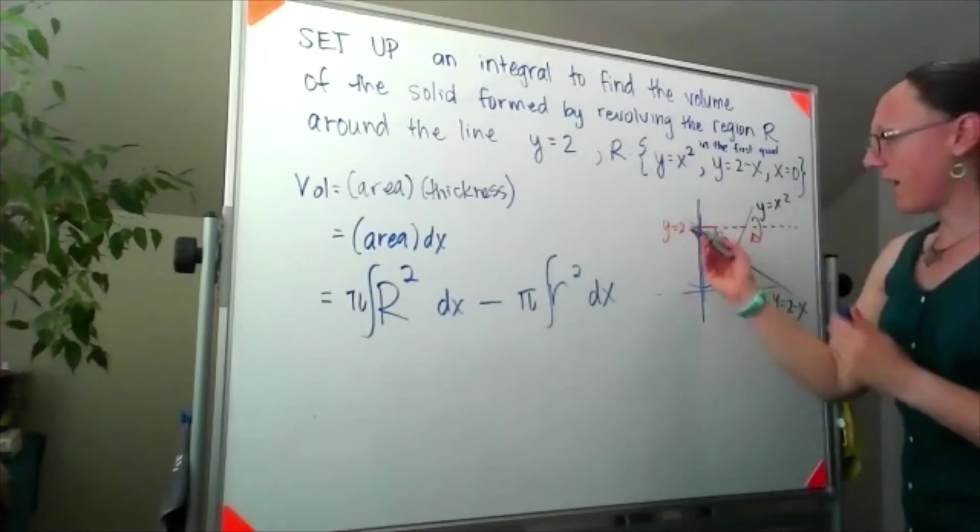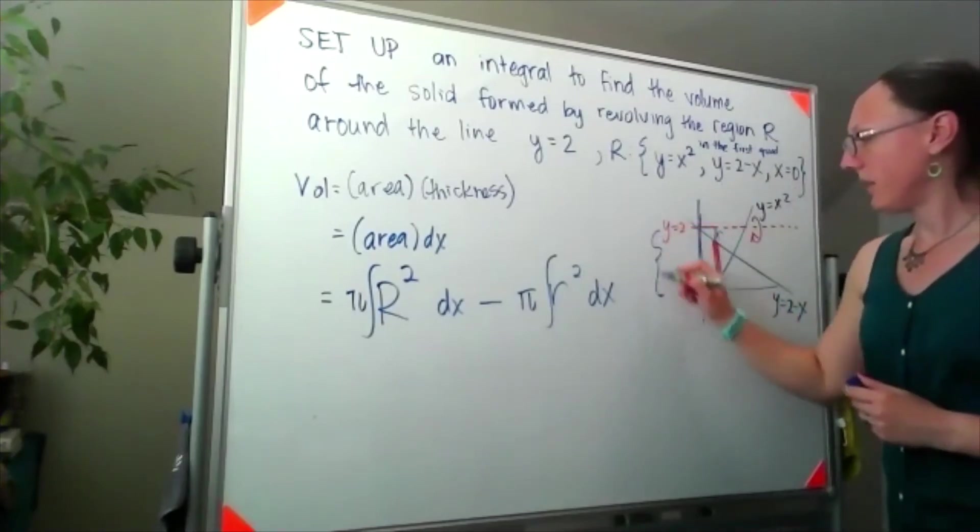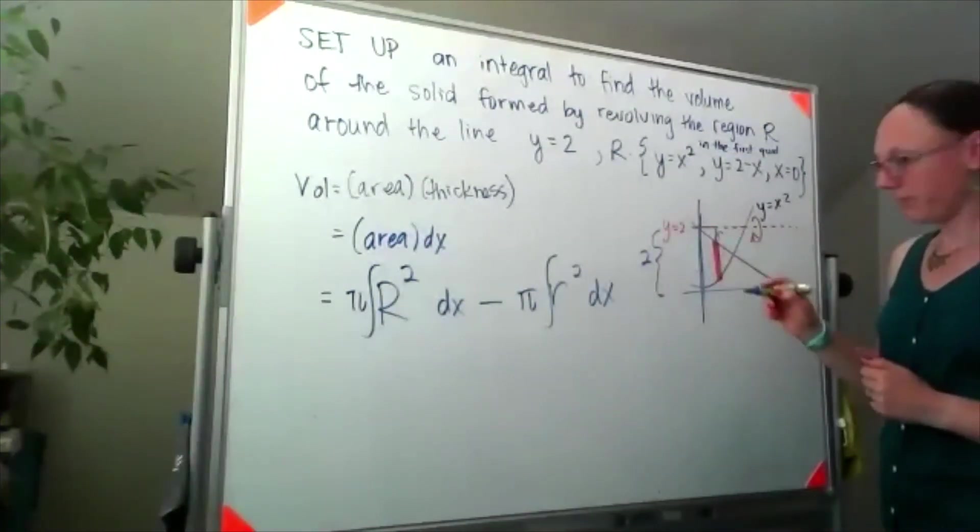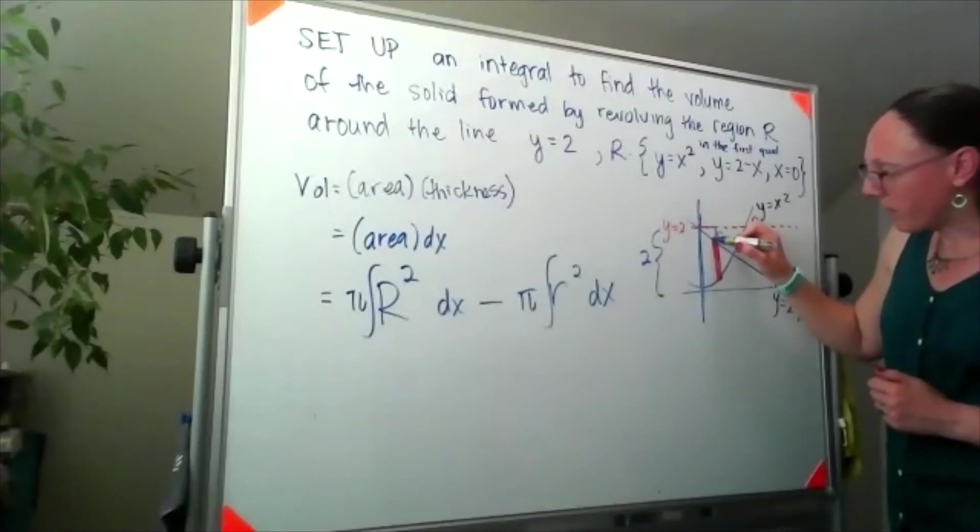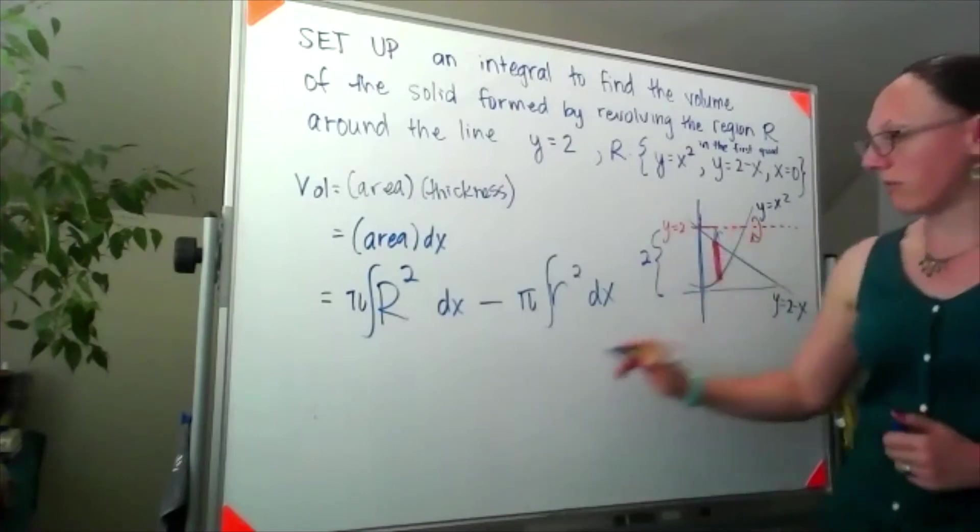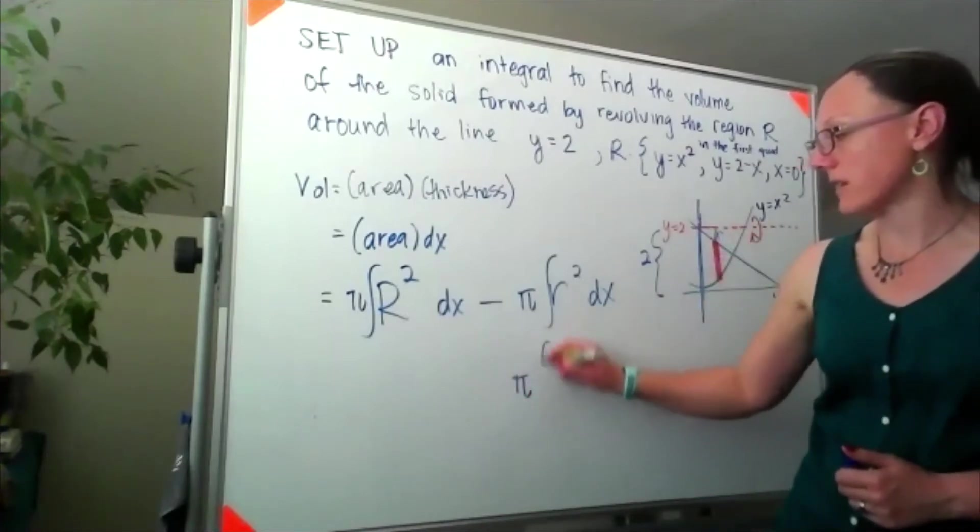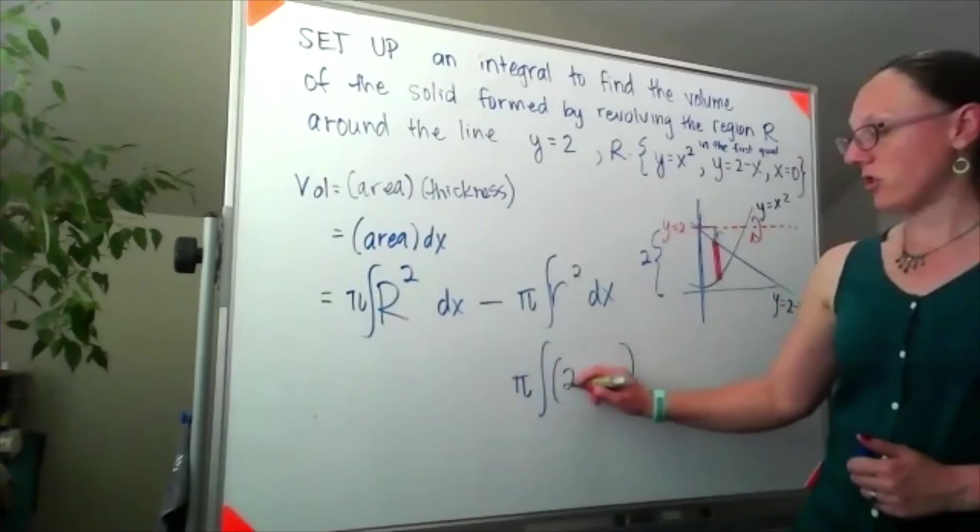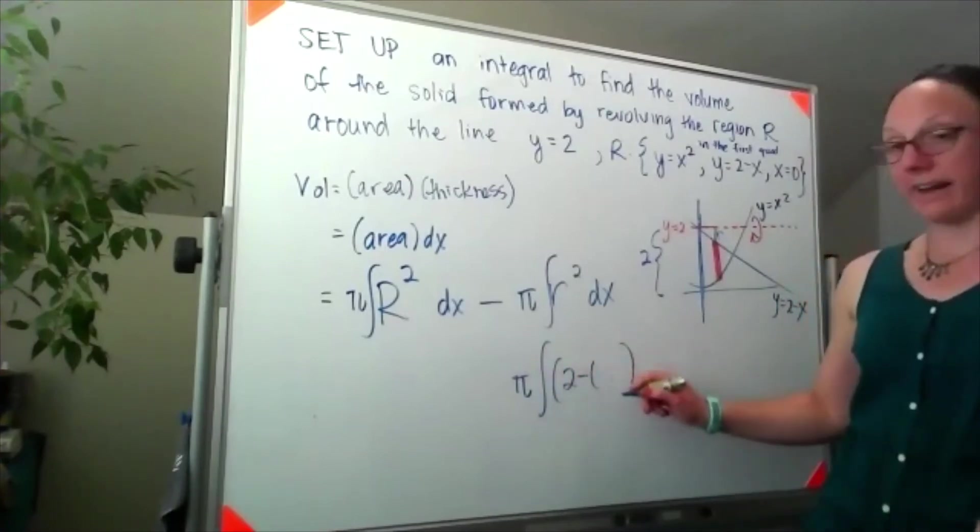So this entire height is a height of 2, and if I were building up to this line, the height would be 2 minus x. So the part I'm looking for, for that small radius, is 2 minus the height of the line.